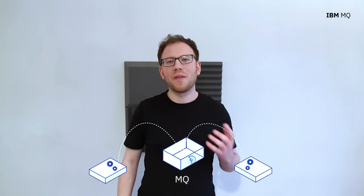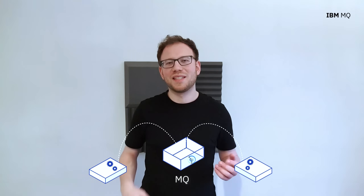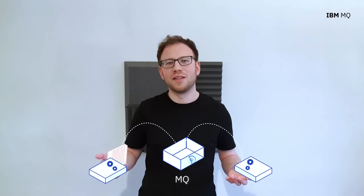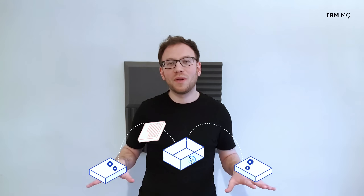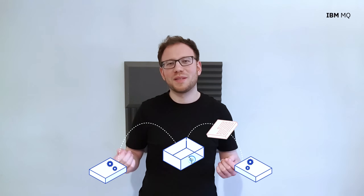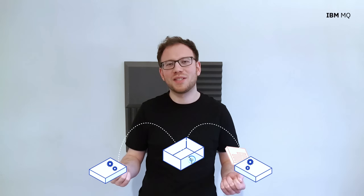MQ is a form of asynchronous messaging. What that means is that applications that want to communicate do not have to be online simultaneously. This is really useful because it means they process messages when they're ready to process them, meaning that the whole system is more resilient because these applications can run at different speeds.